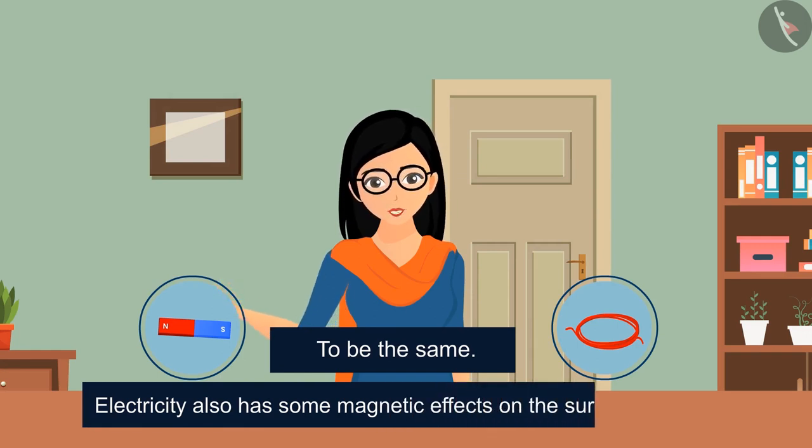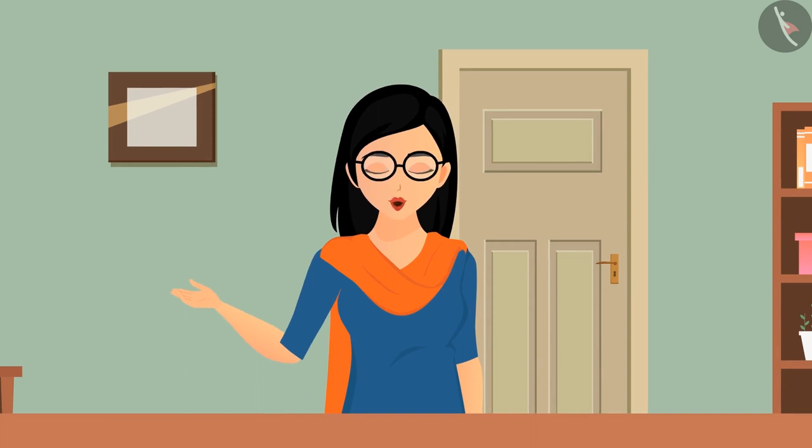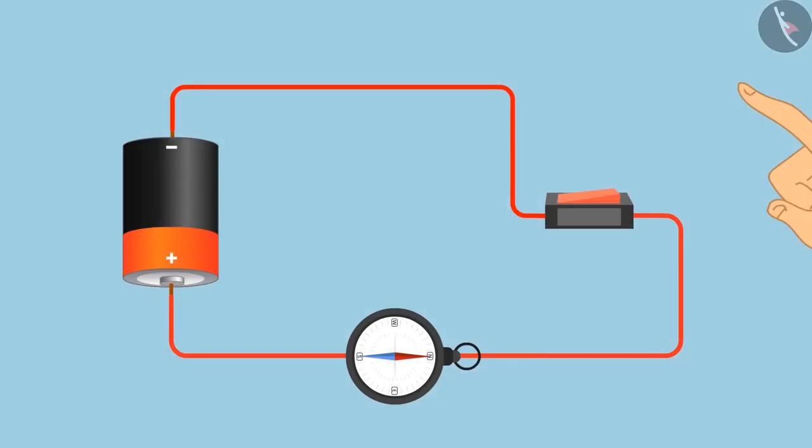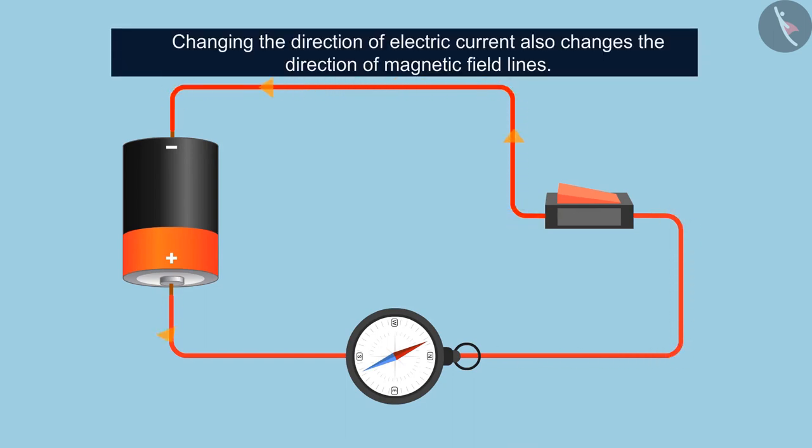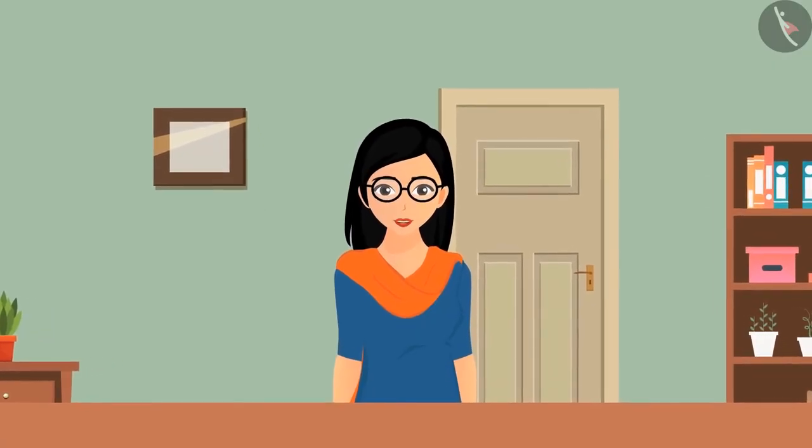If electricity has magnetic effects, then like the magnet it must have magnetic field and field lines. Let's understand this closely. What will happen if the direction of electric current is changed in the circuit? The deflection of the needle will be in the opposite direction, which means that changing the direction of electric current also changes the direction of magnetic field lines. In order to know the direction of the lines, a little change will have to be made in this experiment.